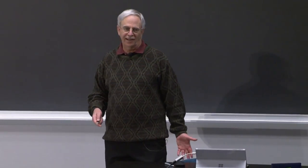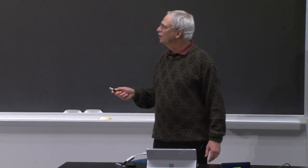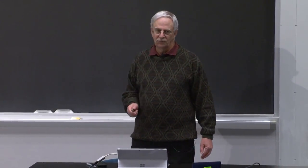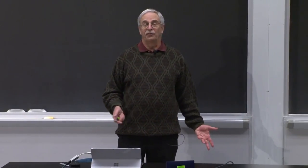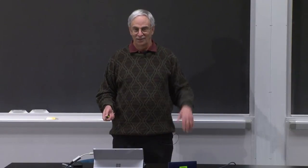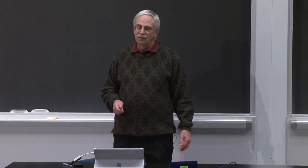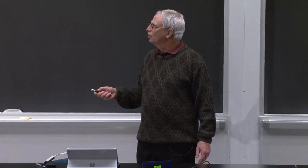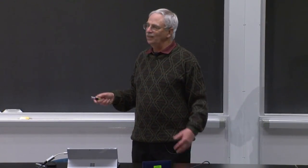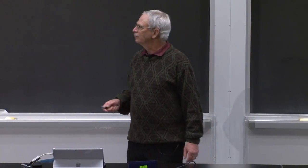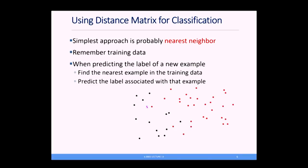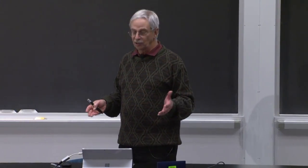How do we use those distances to classify animals? The simplest approach to classification — and one that's actually used a fair amount in practice — is called nearest neighbor. The learning part is trivial: we just remember the training data. When we want to predict the label of a new example, we find the nearest example in the training data and choose the label associated with that example. Here I've drawn a cloud of red dots and black dots. Given a fuchsia x, its nearest neighbor is red, so we call x red.